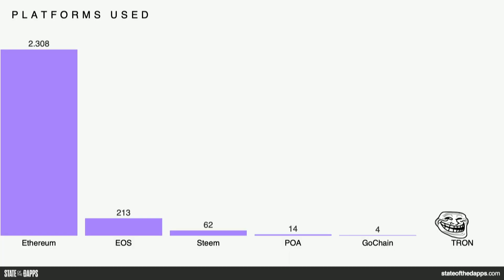Regarding platforms: 2,300 on Ethereum, 2,500 on EOS — missing for sure — 62 on Steem, 14 on POA, four on GoChain. And Tron — well, we're not sure about adding Tron; we do have our reservations. We're not yet convinced with the technology, the team, and what they've been doing because of a few issues of copycats. If you want to have a talk about why Tron should be added, find me afterwards.